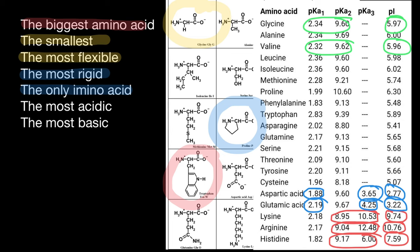If you think this is hard to memorize, it's actually not. For aspartic acid, out of the three pKa numbers, add the two smallest and divide by two. For amino acids with a positive charge at physiological pH, add the two largest numbers out of the three and divide by two. As you can see from the table, arginine would be the most basic, and aspartic acid is the most acidic.